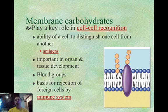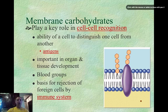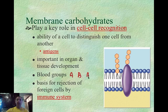There are also membrane carbohydrates, which are involved in cell-to-cell recognition, like with antigens. This is very important in blood types — there is a different carbohydrate for every blood group. Type A has one carbohydrate, type B has another, type AB has both, and type O has none. This is how the basic immune system recognizes blood types.